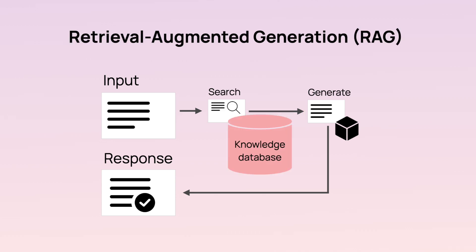Or you might want to use Retrieval Augmented Generation, also known as RAG. This means giving an LLM access to external data. Think of a support chatbot that can pull Help Center articles to give a response — this adds components like a database and search logic to your app.